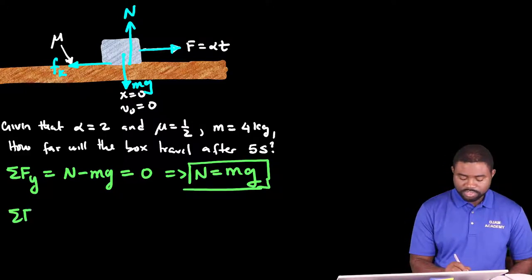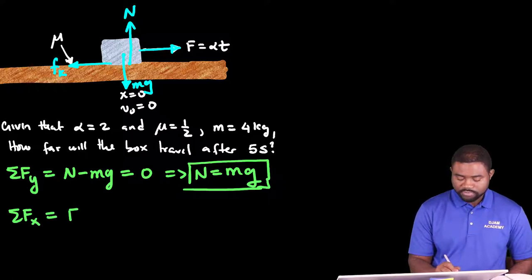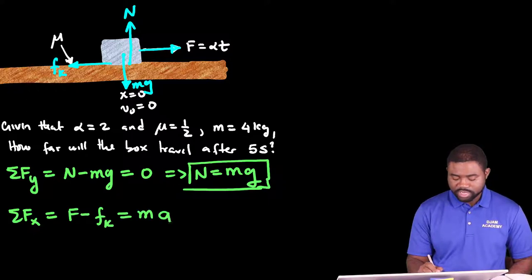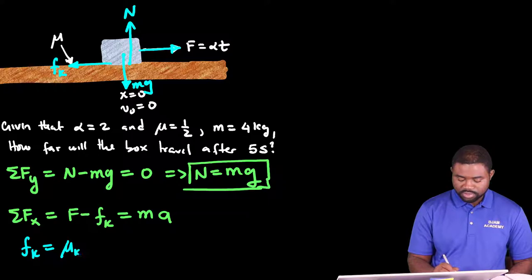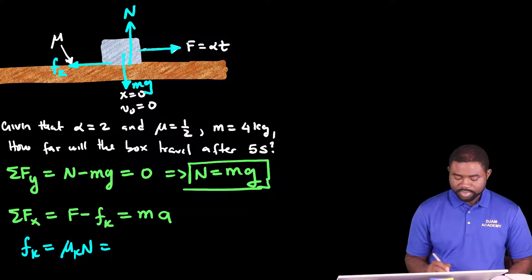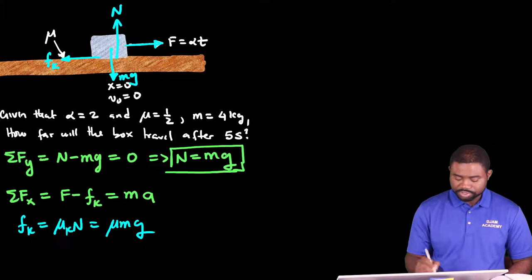Now the summation of Fx is equal to F minus Fk. This will be equal to Ma. By definition, Fk is equal to mu k, which is just mu, multiplied by N. This means that the frictional force acting on the box is given by mu Mg.